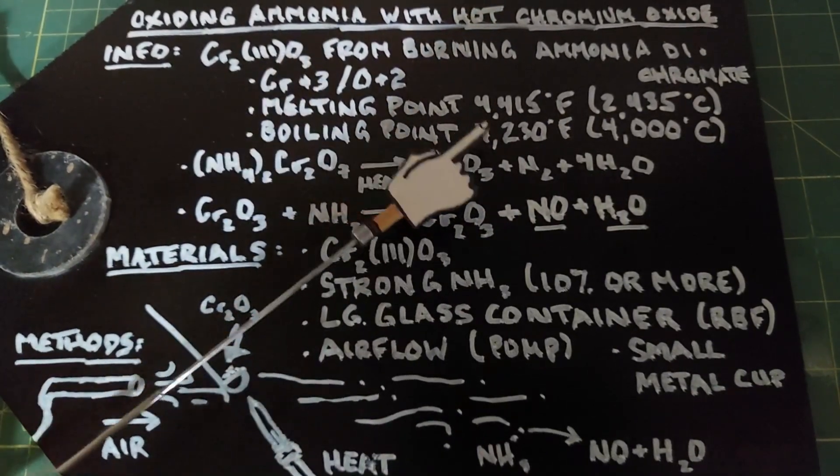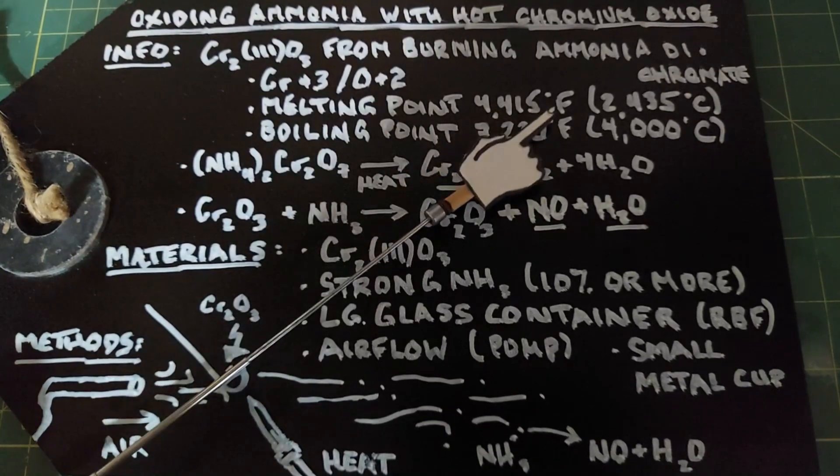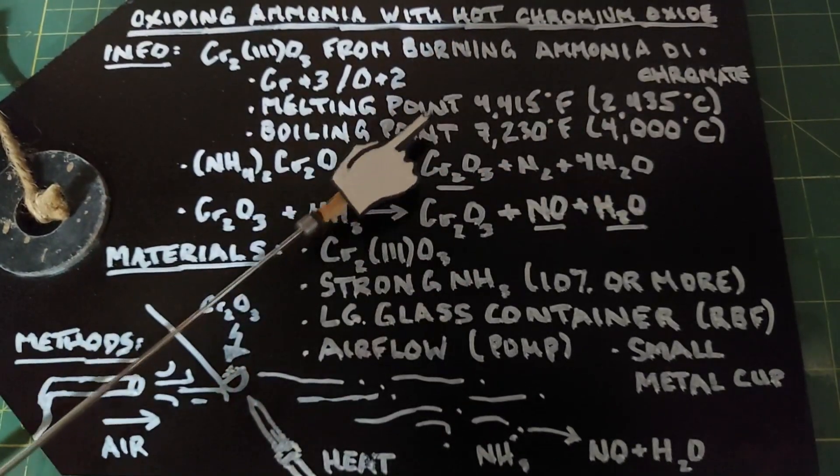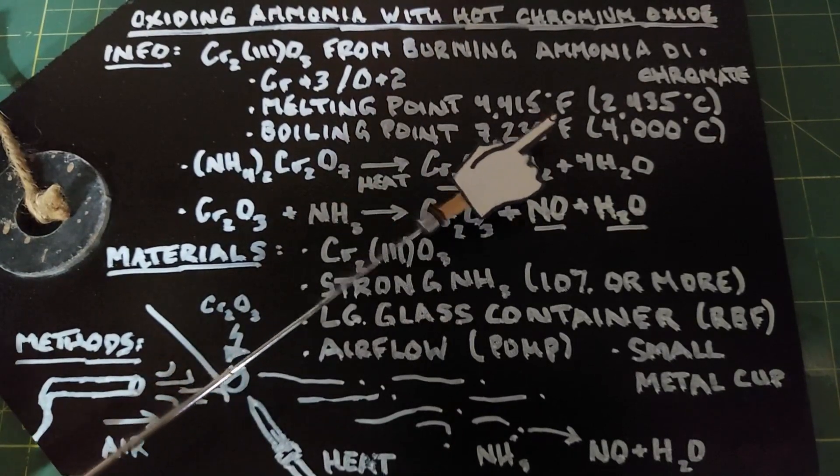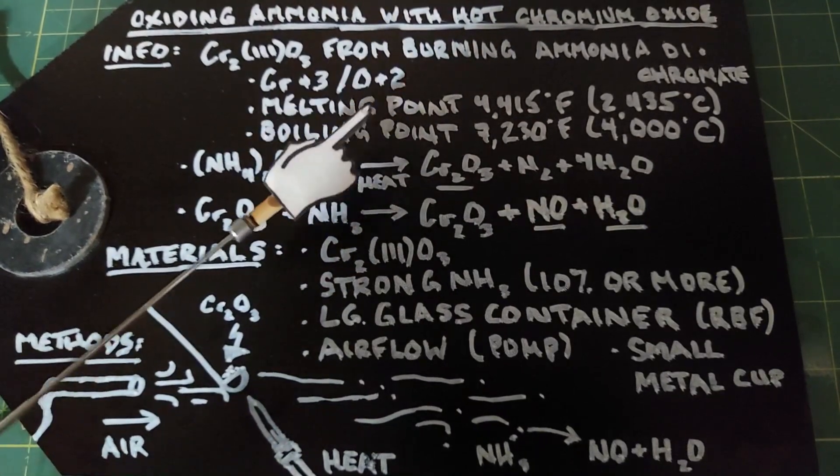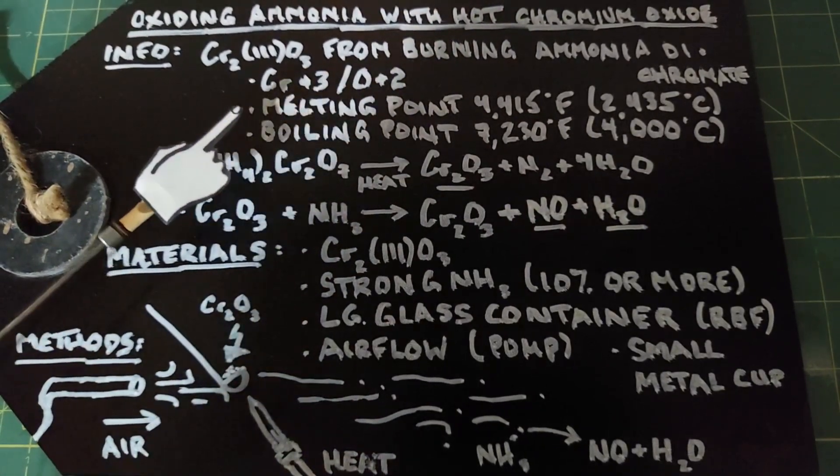The melting point of chromium oxide is 4,415 degrees Fahrenheit or 2,435 degrees Celsius, and the boiling point is 7,230 degrees Fahrenheit or 4,000 degrees Celsius. This is pretty tough stuff, so in this reaction it's going to act as a catalyst and nothing really happens to it.